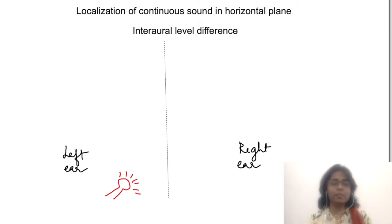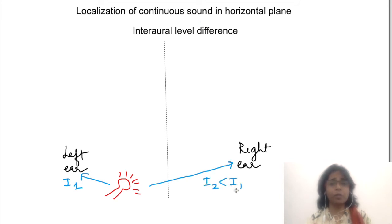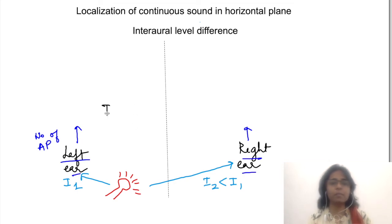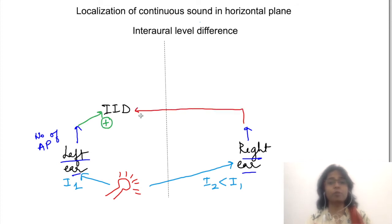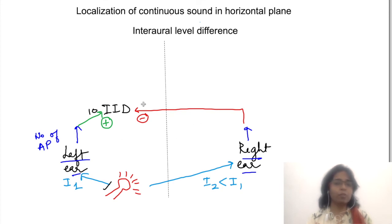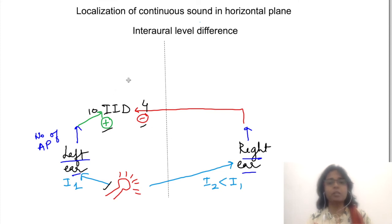If sound comes from one side, it will reach the closer ear with far more intensity than the far ear. Loudness is coded as frequency of action potentials in the afferents, so the frequency of action potentials from one ear will differ from the other. IID neurons are stimulated by information from the ipsilateral ear and inhibited by information from the contralateral ear. For example, if 10 action potentials reach from the left ear and 4 from the right ear to the left superior olivary nucleus, the level of excitation of IID neurons is 10 minus 4.